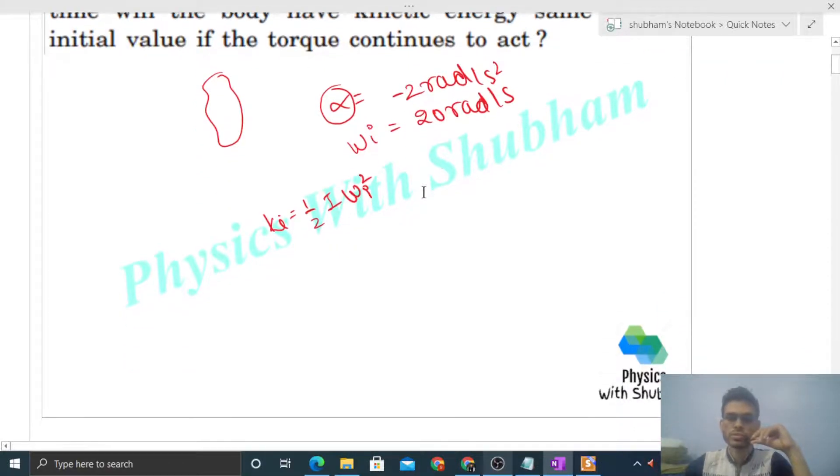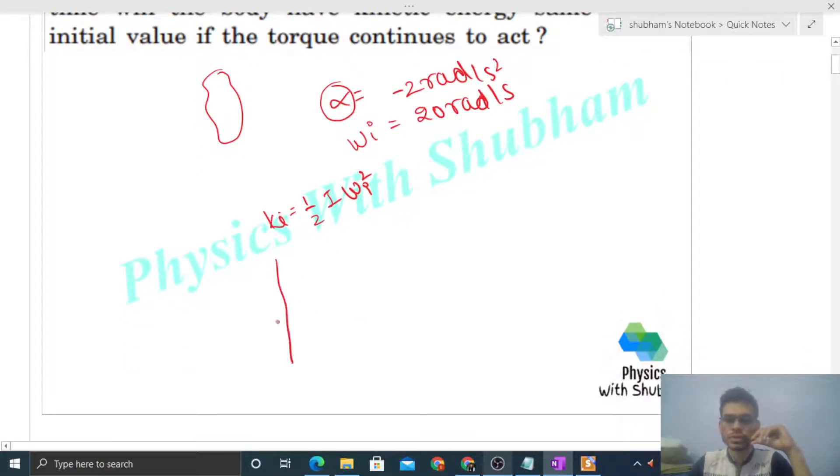So let me plot the graph so that you can understand it better. Here we plot the omega on the y-axis and time on the x-axis. So initial omega at time t equals 0 is 20. Now it decreases because of this deceleration.